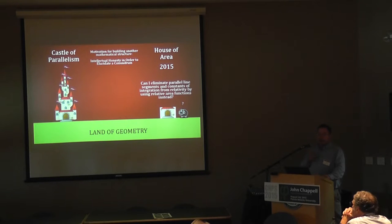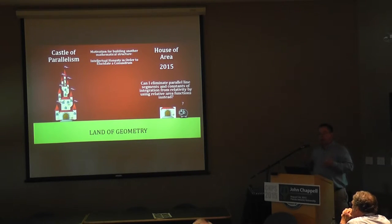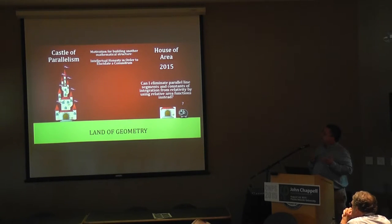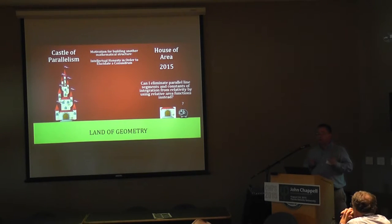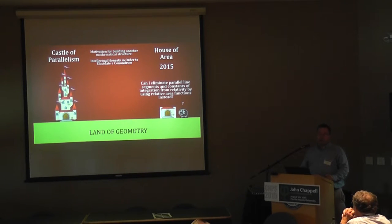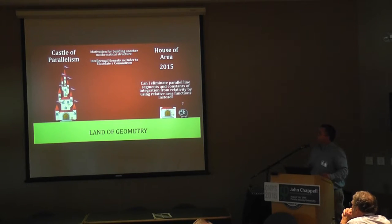In order for me to ask a question I didn't have to build from within the existing framework, I'm going to have to build a different house in the land of geometry. What I'm asking is: can I eliminate parallel line segments and constants of integration from relativity by using a relative area function instead? If you were to go to a book and look up a relative area function, you wouldn't find it, because you have to build another structure to be able to ask this question.